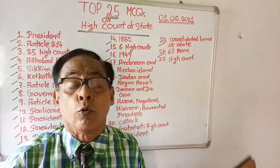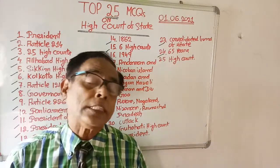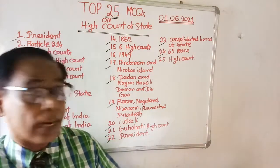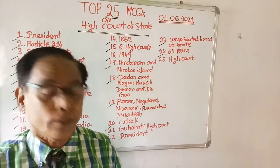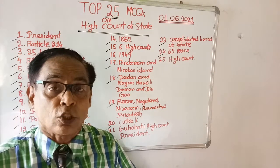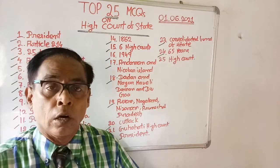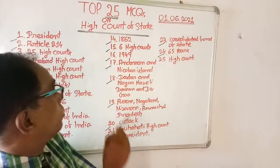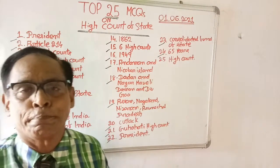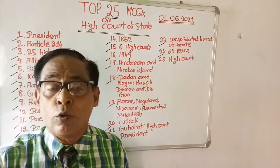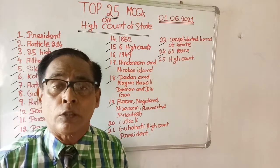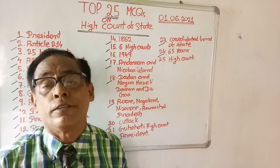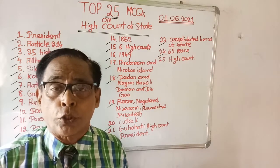Question number twenty: Odisha High Court is situated in which city? Options are: Bhubaneswar, Cuttack, Puri, and Sambalpur. The right answer is Cuttack — Odisha High Court is situated in Cuttack.